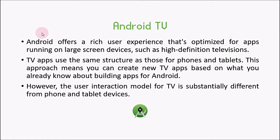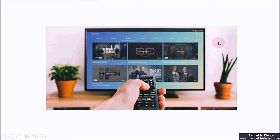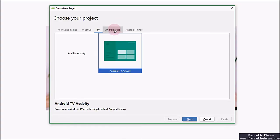Android TV is a platform to develop applications for large-screen devices such as high-definition televisions. TV apps use the same structure as those for phone and tablet. You can create applications for TV devices on which the Android operating system runs. However, the user interaction model for TV is substantially different from phone and tablet devices. If you want to create an Android application for a TV device, you should choose an Android TV activity from here.